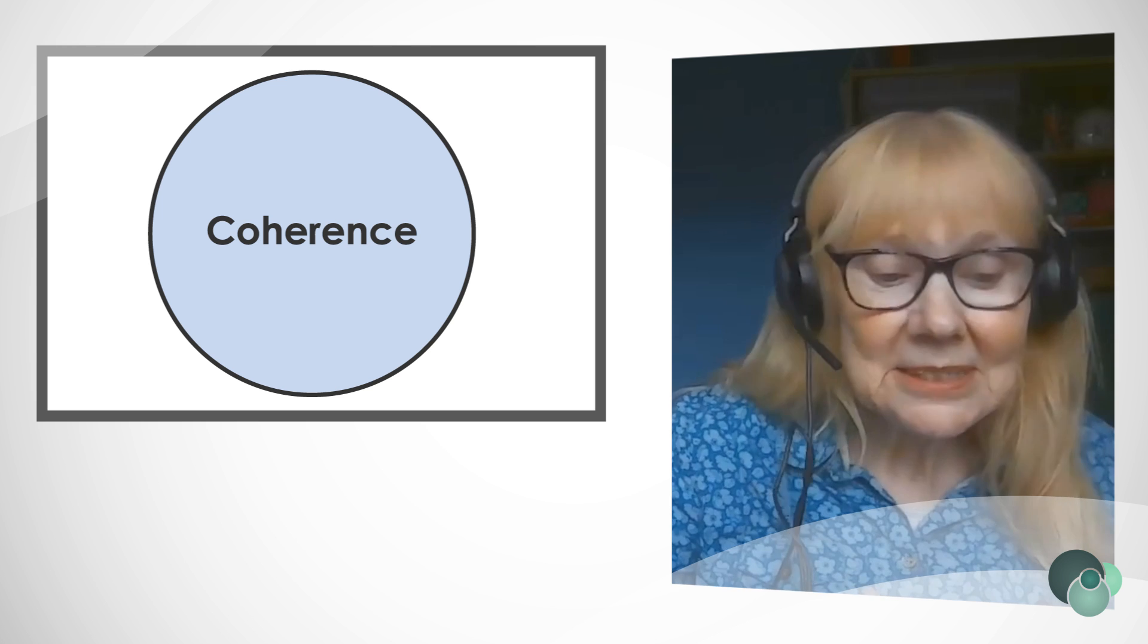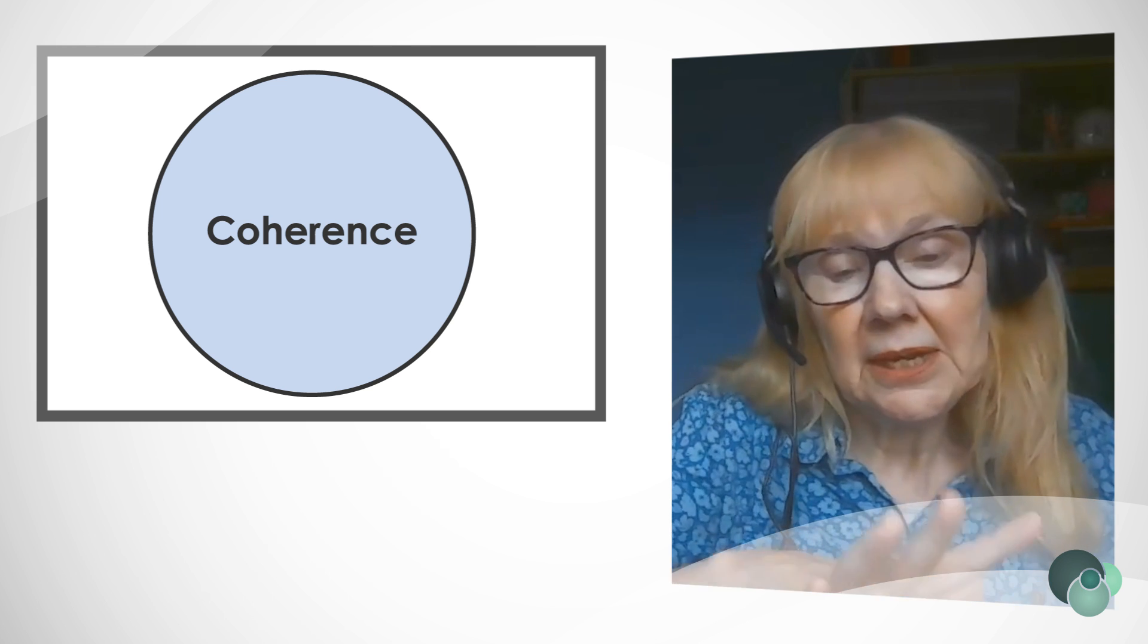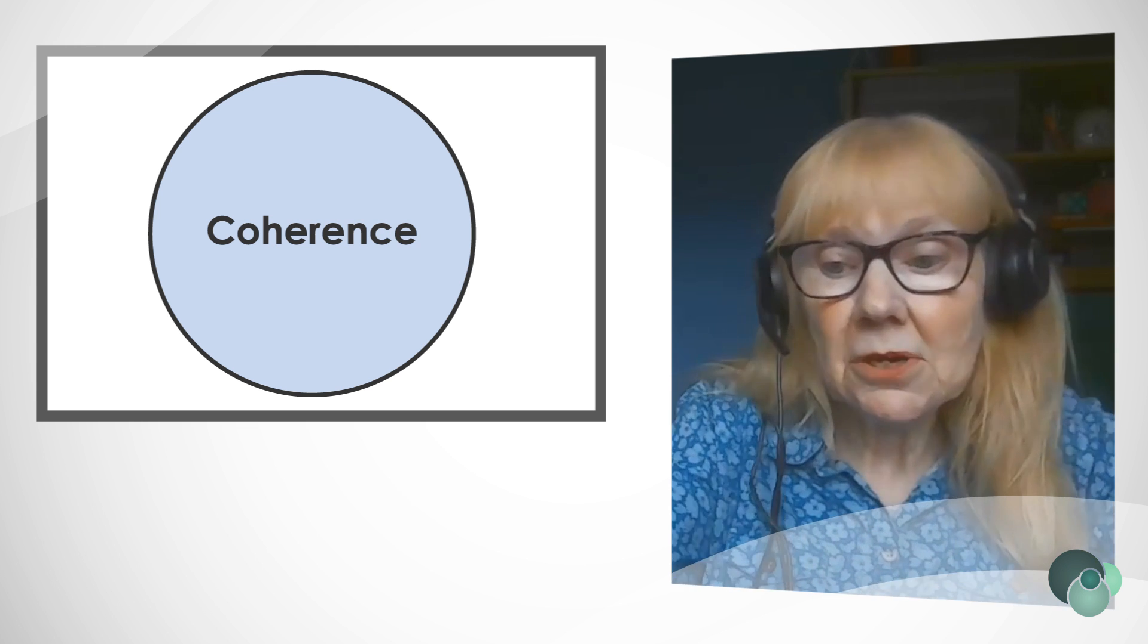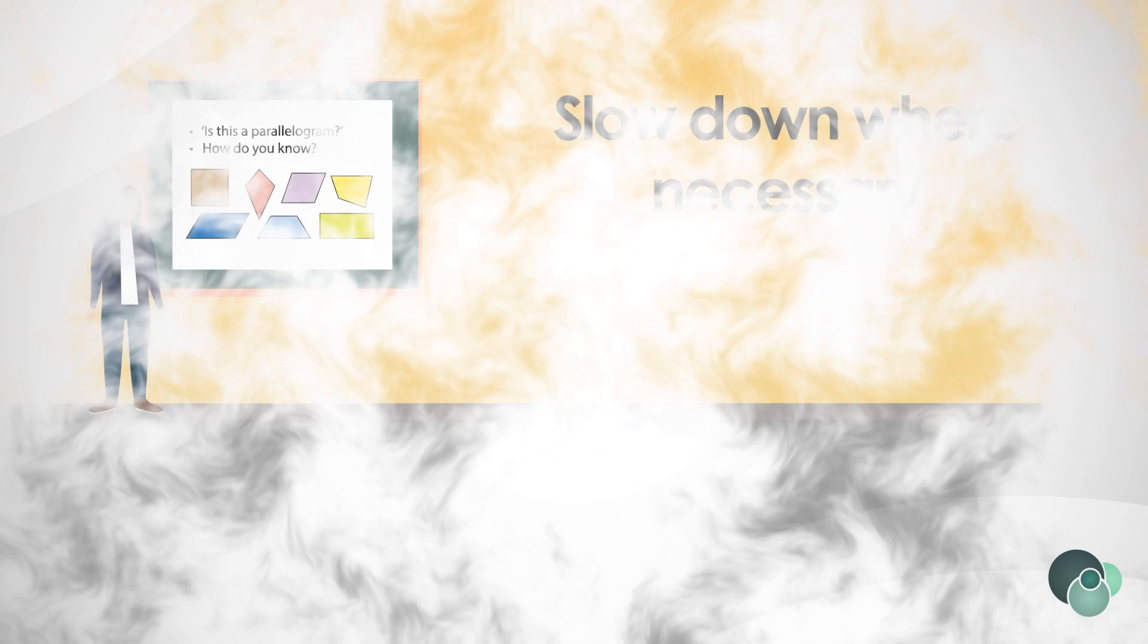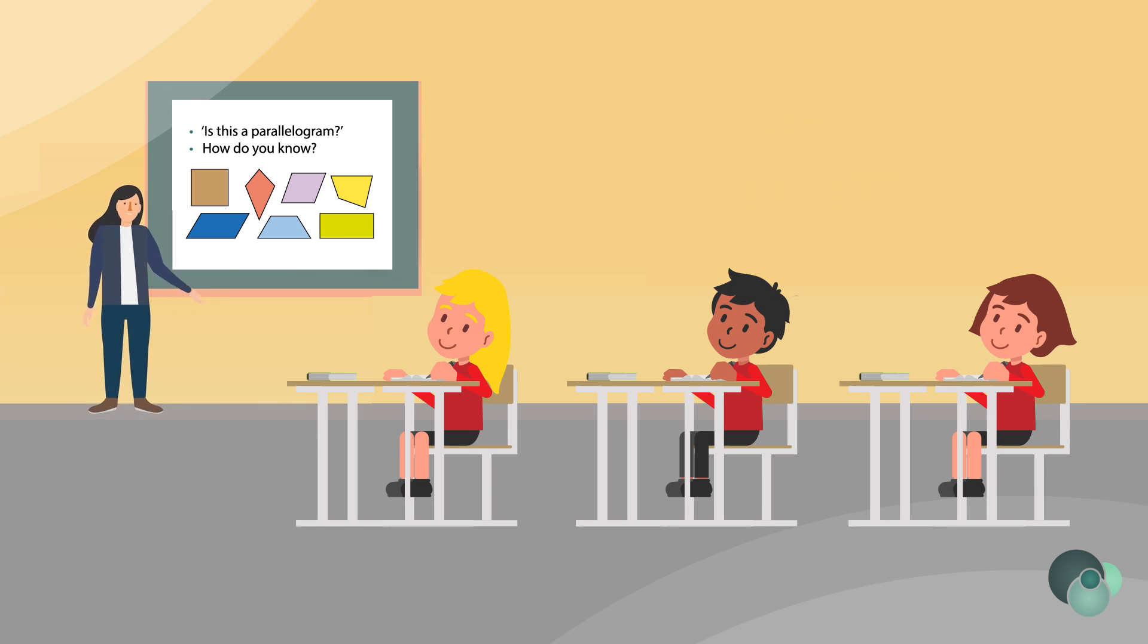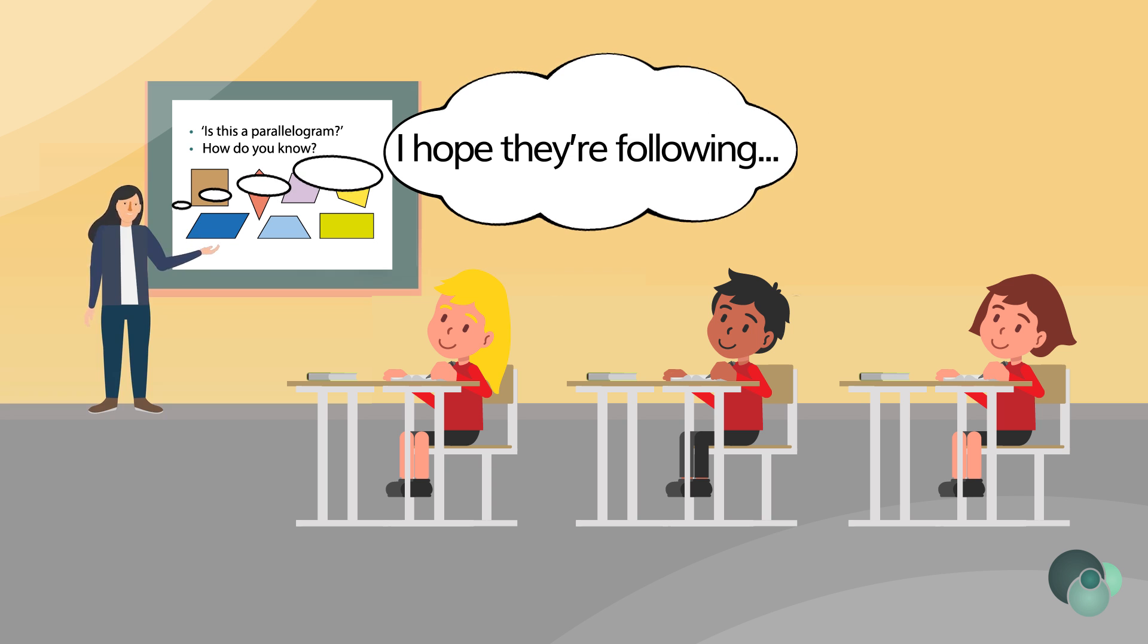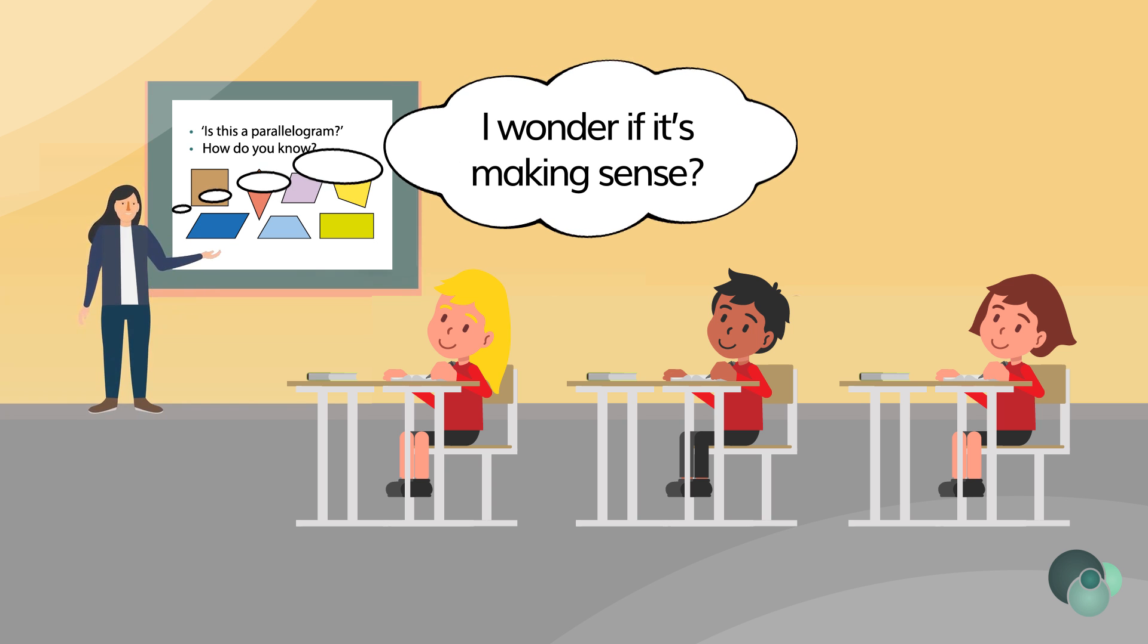Coherence is about that sequence of learning and how that builds and makes sense to children and builds those firm foundations. We need to start at a point that's accessible and then build the learning in those small connected steps in a really clear coherent manner. Slow down where necessary to ensure that all are with you. Just check: are they on that journey with you? Are they still there? Is it making sense to them?